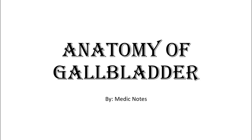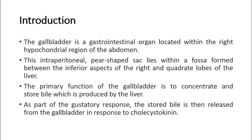Welcome back to another video of Medic Notes. This video is on anatomy of the gallbladder. The gallbladder is a gastrointestinal organ located within the right hypochondrial region of the abdomen. This intraperitoneal, pear-shaped sac lies within a fossa formed between the inferior aspects of the right and quadriglobes of the liver. The primary function of the gallbladder is to concentrate and store bile, which is produced by the liver. As part of the gustatory response, the stored bile is then released from the gallbladder in response to cholecystokinin.